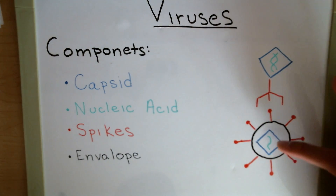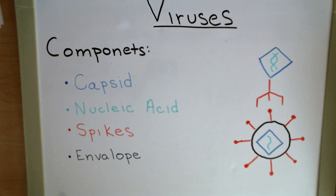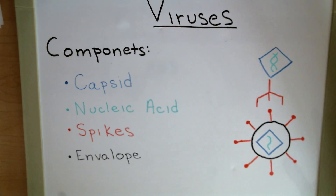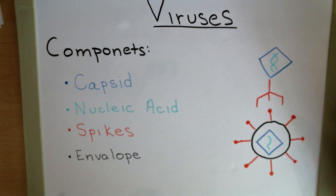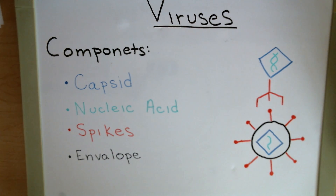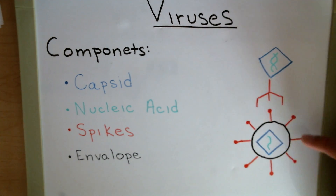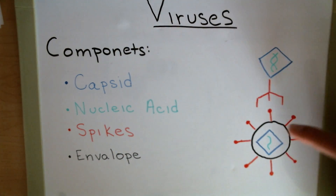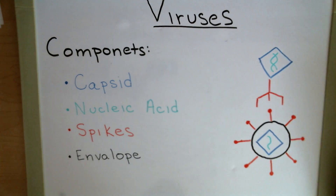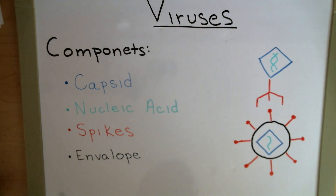This envelope that surrounds the capsid and the nucleic acid came from the host via exocytosis. So this virus was once inside of a host cell, pushed itself out by exocytosis, and took a piece of that plasma membrane from the host cell. What that does is it prevents the virus from being detected by the immune system, because this envelope has the host receptors on it. So when the immune system comes along and reads this envelope, it says 'yourself — we're not going to attack you.' This is one of the virulence factors of the virus.